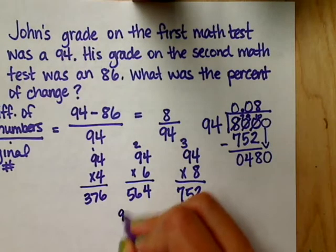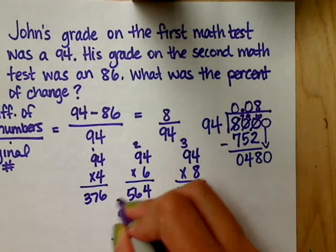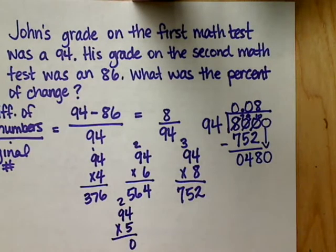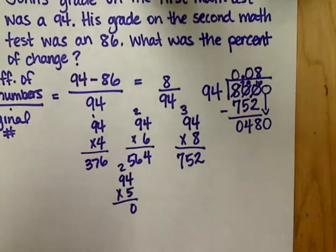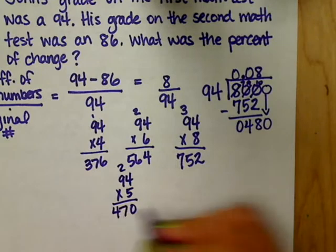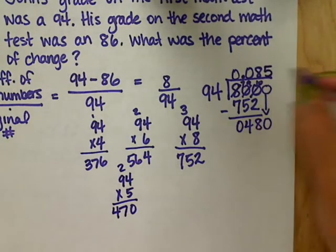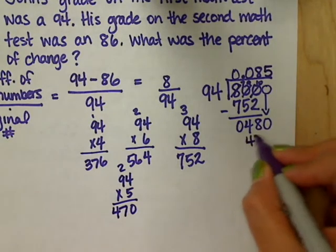Oh, what a mess. Times 5, that's 20. 9 times 4? I'm sorry, 9 times 5? 45 plus 2? All right. That's closer. That's better. 8.5 up here. 470 subtract.